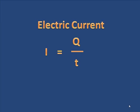Q is the charge measured in coulombs divided by T, the time in seconds. The unit for electric current is coulomb per second, which is also called an ampere.